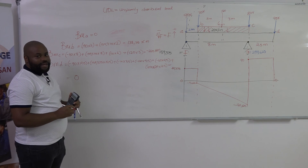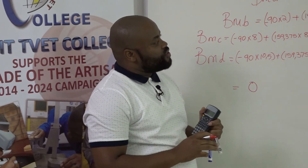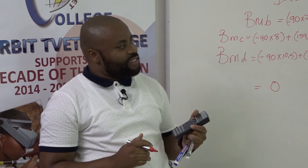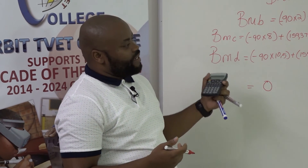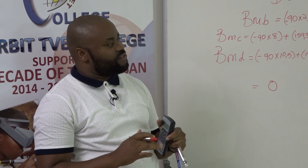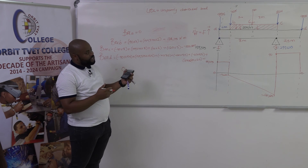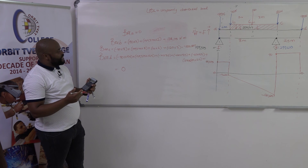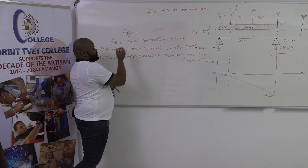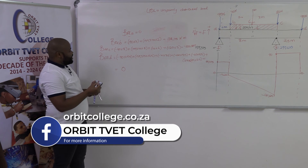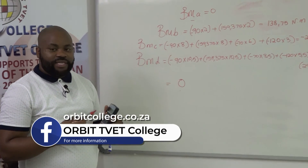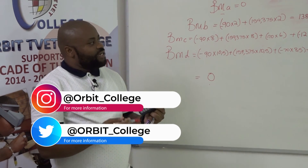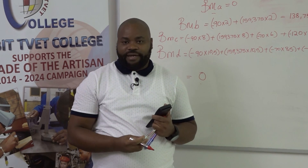We are now going to stop here for today's lesson. On our next lesson we will continue in drawing the bending moment graph so that we can indicate the maximum and minimum bending moment of this beam. To recap: bending moments at A is zero because that's where our beam starts, and bending moments at D is always zero because that's where our beam ends. On our next session we will proceed to draw the bending moment graph. Thank you.